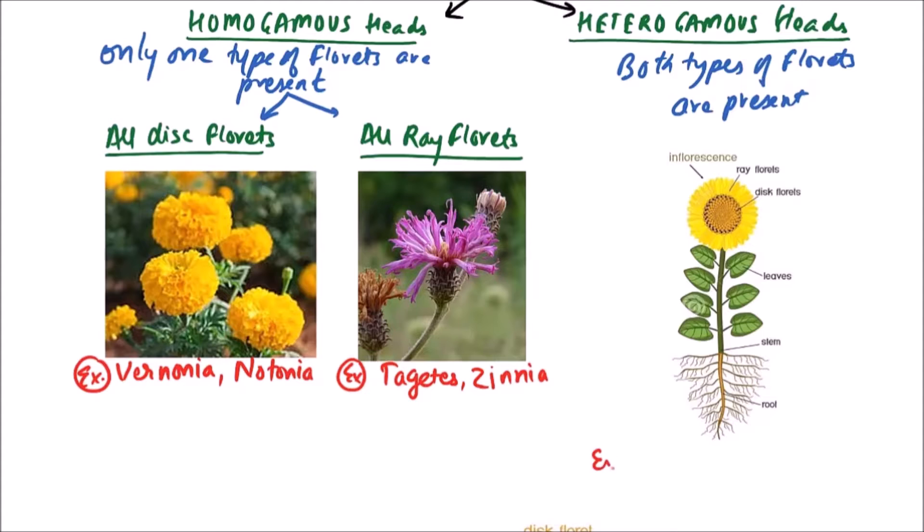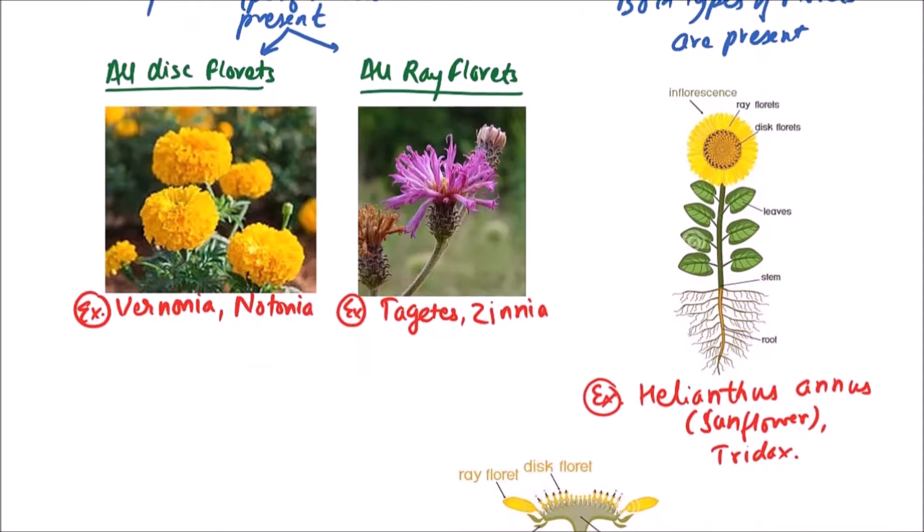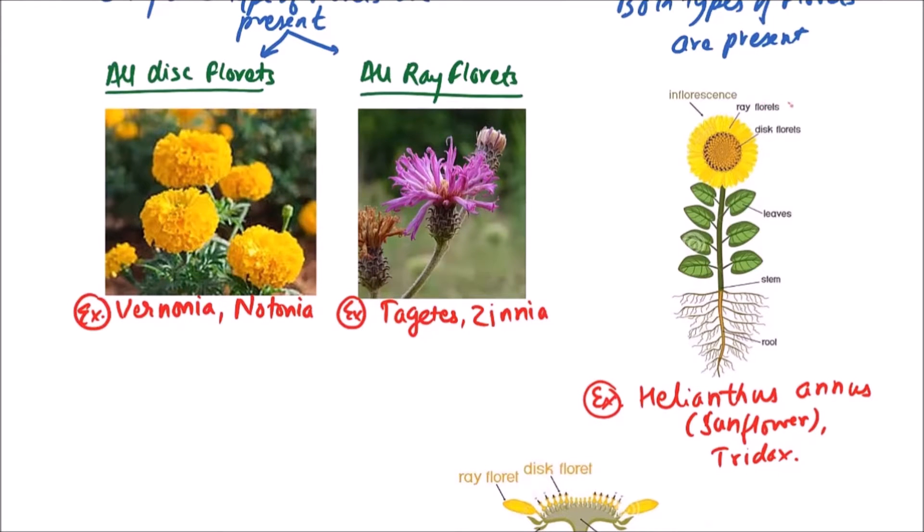Examples include Helianthus annuus, that is sunflower, and also Tridax is another example. In sunflower, ray florets on the periphery and disc florets in the center can be observed.